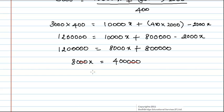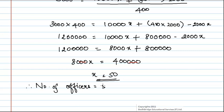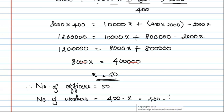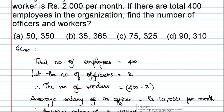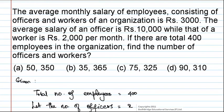From this we get X = 50. Therefore, the number of officers is equal to 50. The number of workers is equal to 400 minus X, which is 400 minus 50, equal to 350. Hence, the number of officers is 50 and the number of workers is 350, which corresponds to option A.